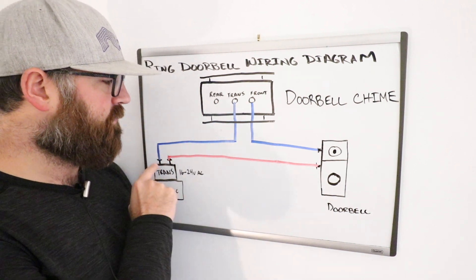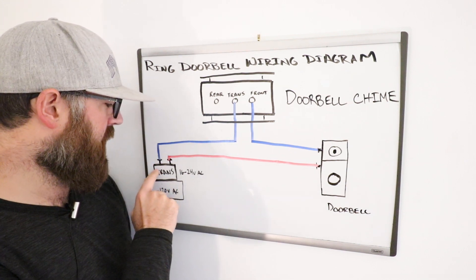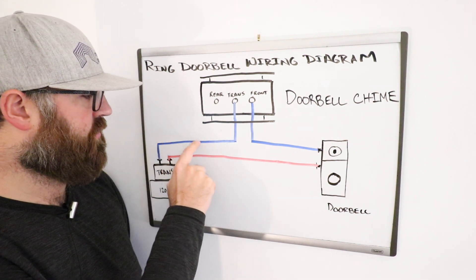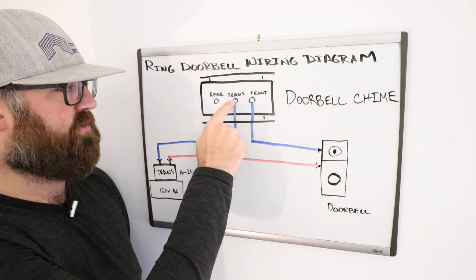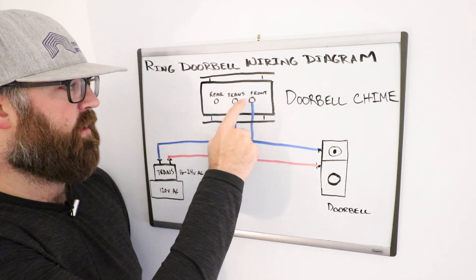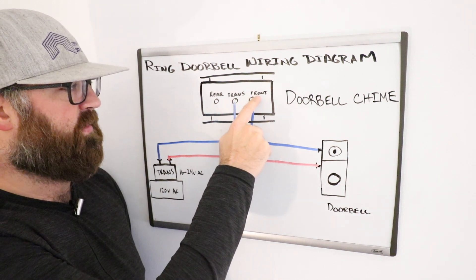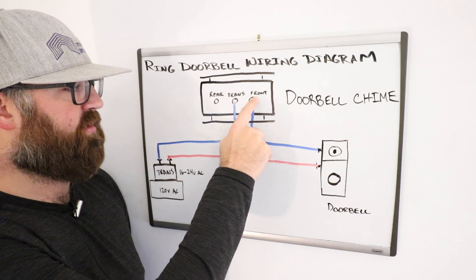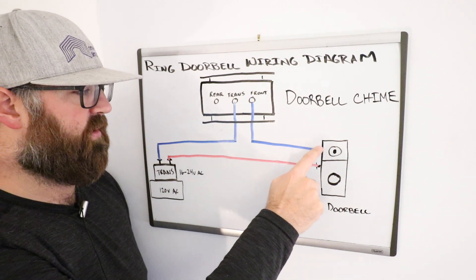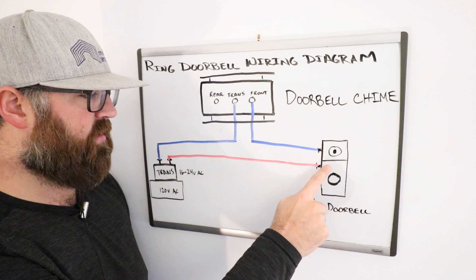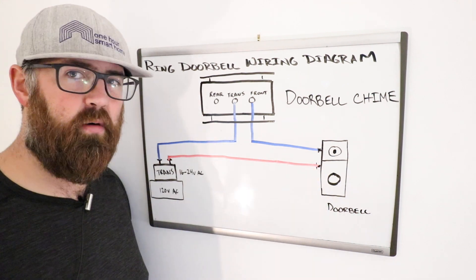So what you've got here is you can just follow the path. We've got a wire that goes from the transformer to the transformer terminal on the doorbell chime. And then you've got from the front terminal on the doorbell chime to the front doorbell, your ring doorbell, and then from your ring doorbell back to the transformer.